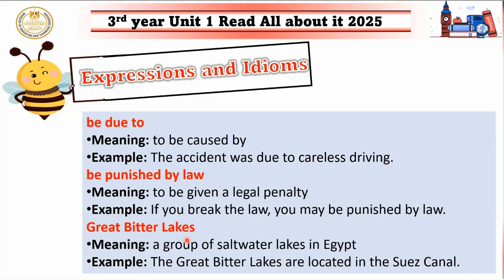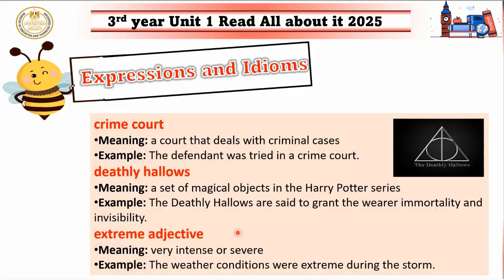'Great Bitter Lakes' — this is a group of saltwater lakes in Egypt, located in the Suez Canal area. You might think they are in England or America, but no — they are in the Suez Canal. For example: the Great Bitter Lakes are located in the Suez Canal.